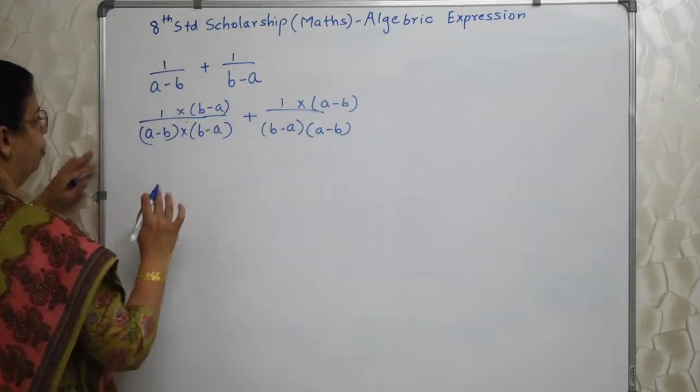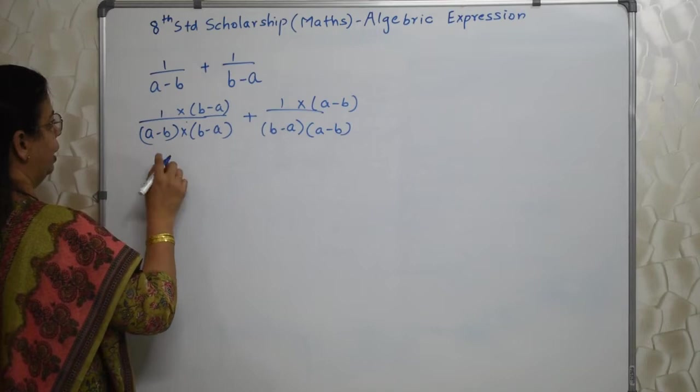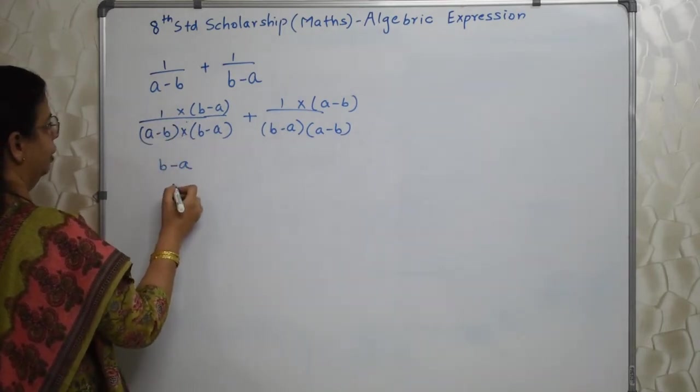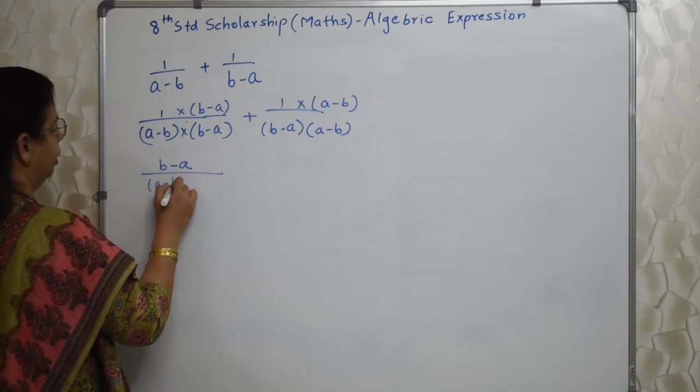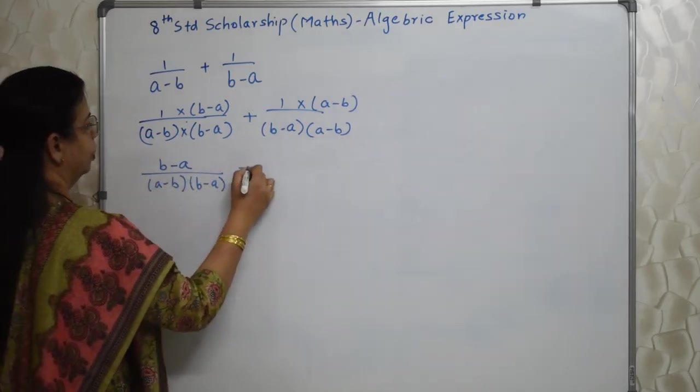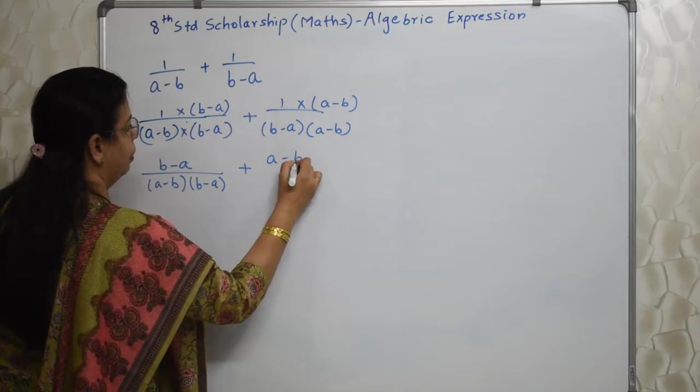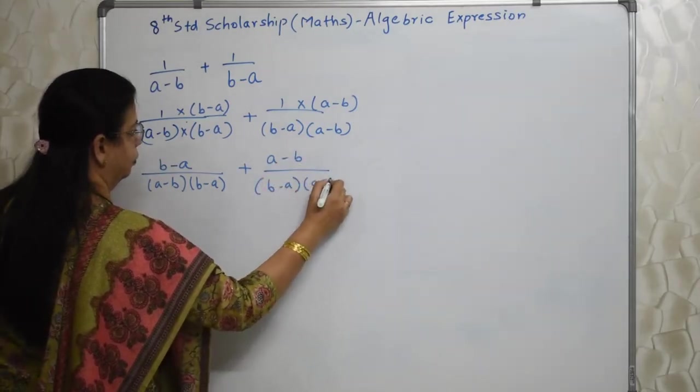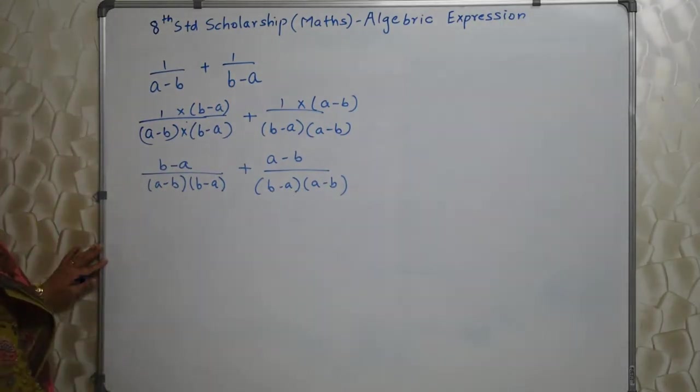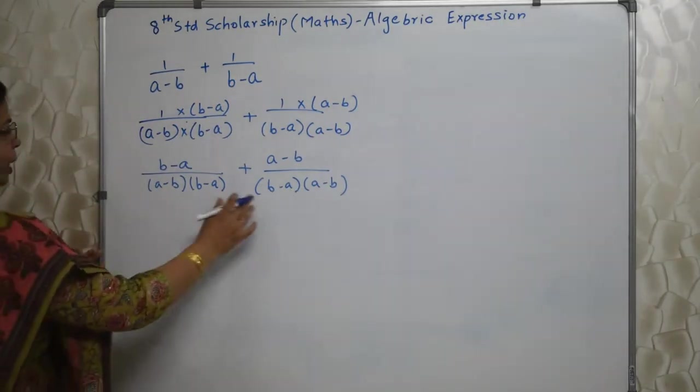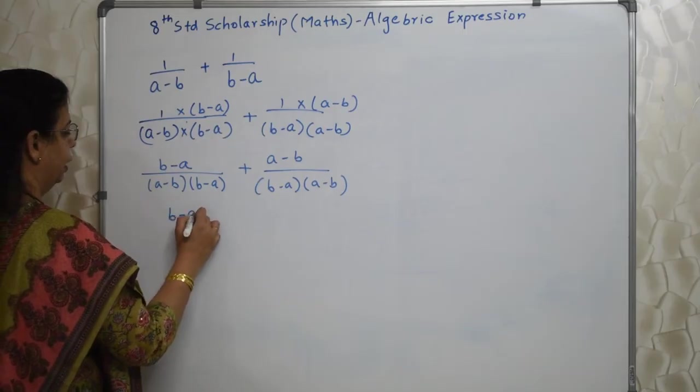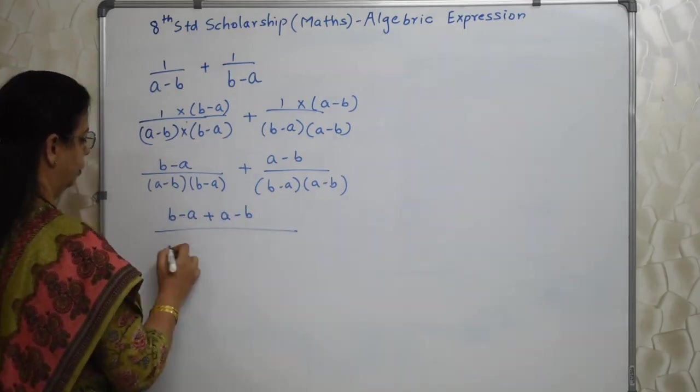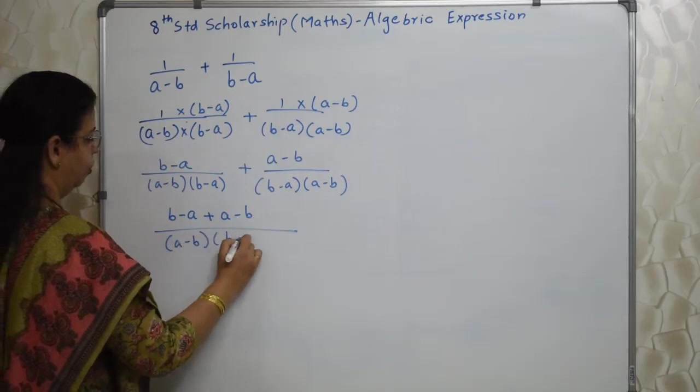Now they have same denominators. So our job is very easy. 1 into anything is same. So B minus A here upon A minus B, B minus A. Here same way A minus B on top and down it is same. Order doesn't matter. Since the denominators are same, we can club or add the numerators and down common denominator.